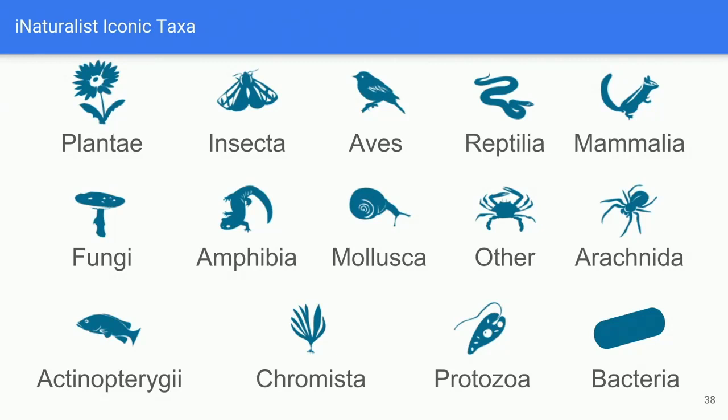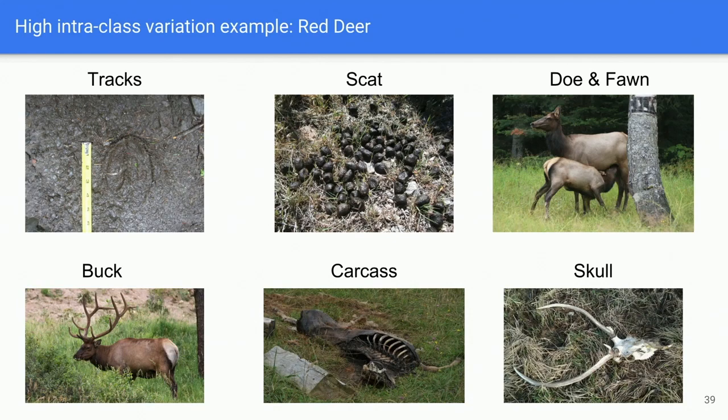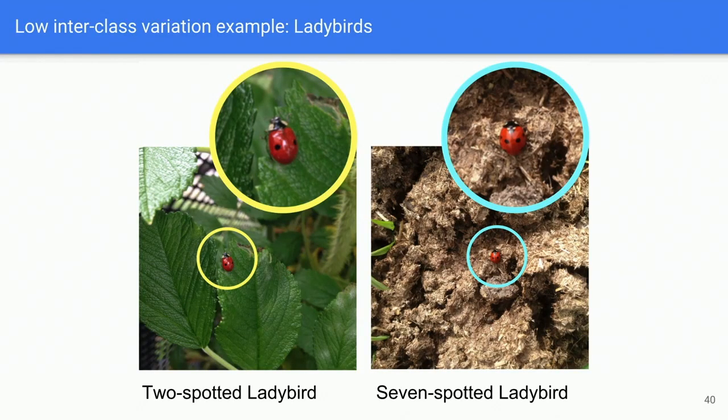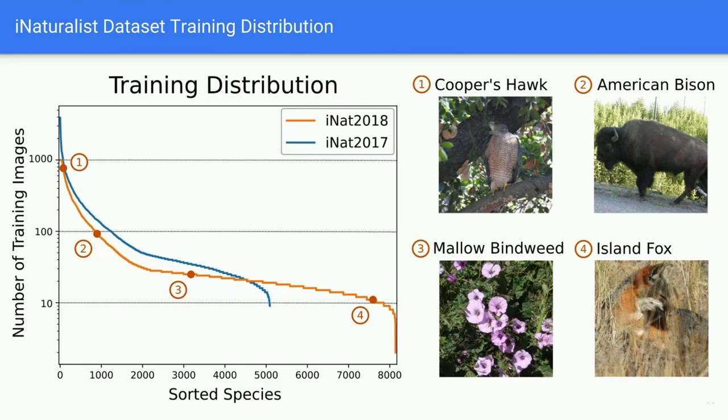Observations span pretty much all areas of the natural world, divided roughly into 14 super-categories. This example highlights high intraclass variation — all observations of the red deer, a species from Europe and Asia, but each image captures a very different aspect. Another fun example: two different ladybird species where the number of spots is crucial for identification — the two-spotted ladybird versus the seven-spotted ladybird.